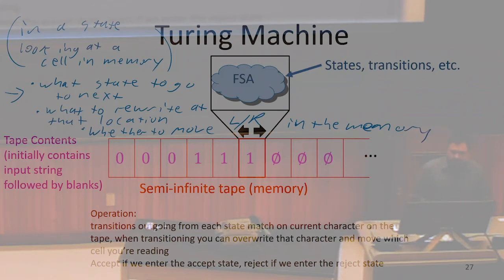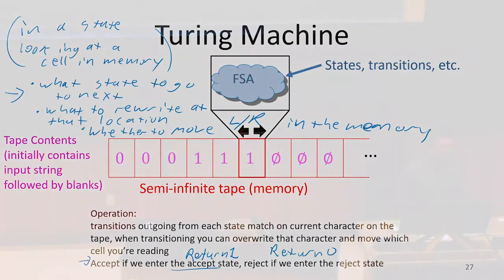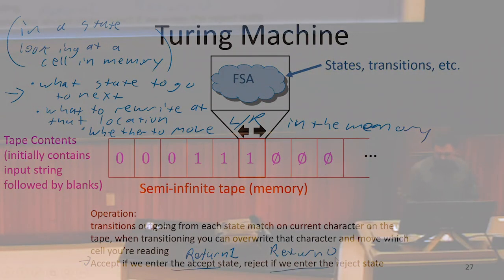The way we decide which value to return is through two special states in the Turing machine. One state is identified as an accept state — a return-one state — and one state is identified as a return-zero state. If we're ever in the return-one state, we stop computing altogether and return one right then, just like executing a return statement in Python. If we ever enter the accept state, we stop and return one. If we ever enter the reject state, we stop and return zero. Accept means return one; reject means return zero.